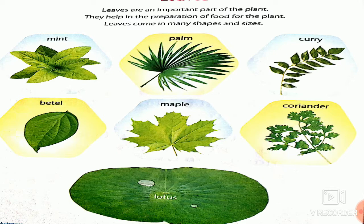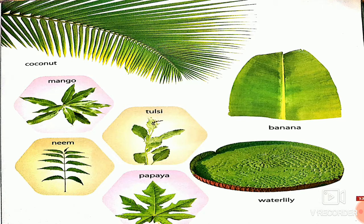The leaves we have seen are: mint leaf, palm leaf, curry leaf, beetle, maple, coriander leaf, lotus, coconut leaf, mango leaf, tulsi, neem, papaya, banana, and water lily.